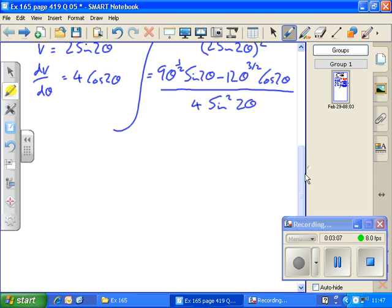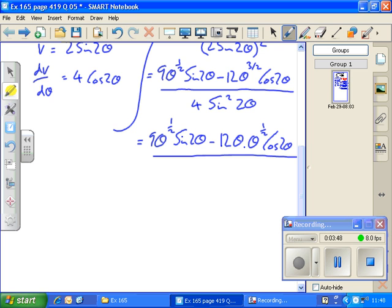We can factorise, we can take theta to the half and 9 outside. If we think about this, rewrite this as 9 theta to the half sine 2 theta minus, I can think of this as 12 theta times theta to the half. If you look at that, you can see that theta times theta to the half means theta to the 1 plus a half, which is 1 and a half, or 3 over 2 cos 2 theta, all over 4 sine squared 2 theta.